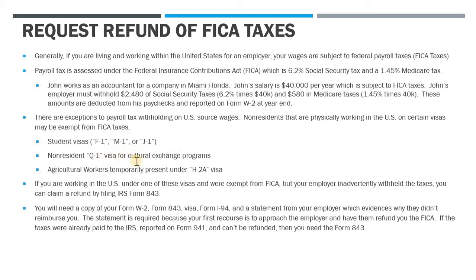Q1 visas and certain types of agricultural workers under an H2A visa who are temporarily in the US can also get those exemptions. So if you're working in the US under one of these visa types and were exempt but your employer didn't know or wasn't aware of the rules and withheld tax on you anyway, you can get a refund by filing Form 843 with the IRS.